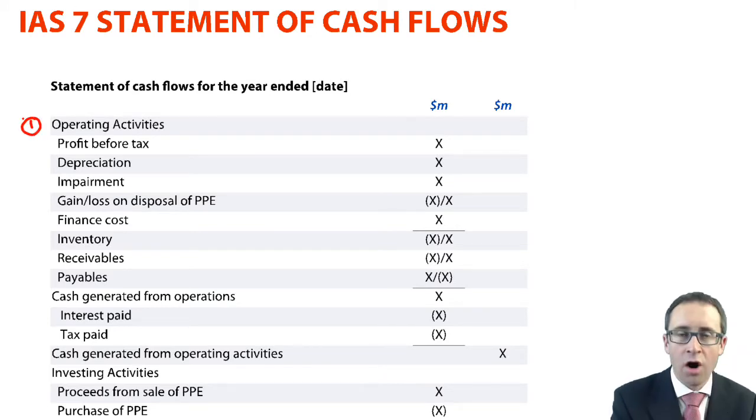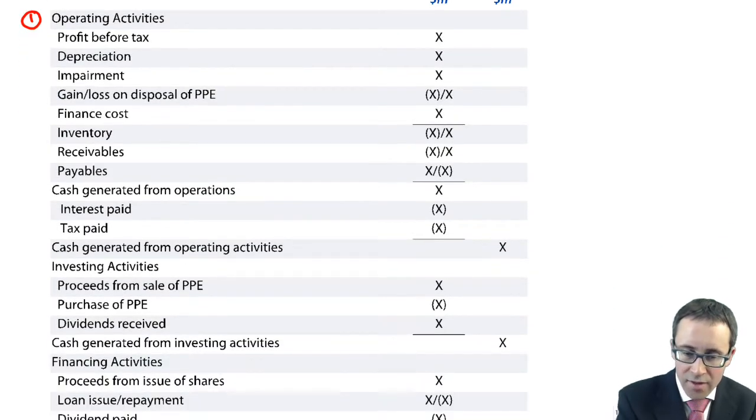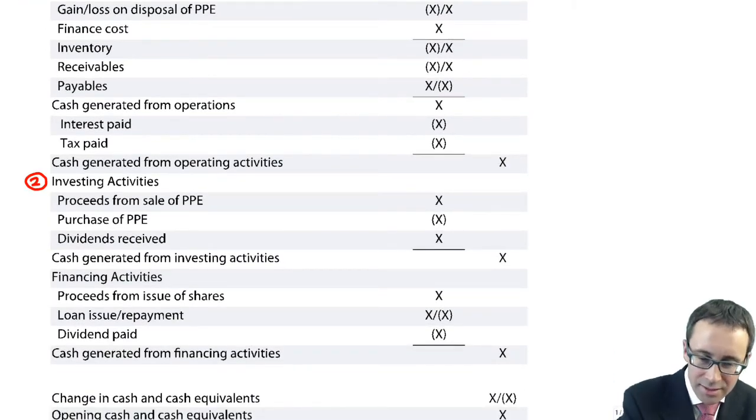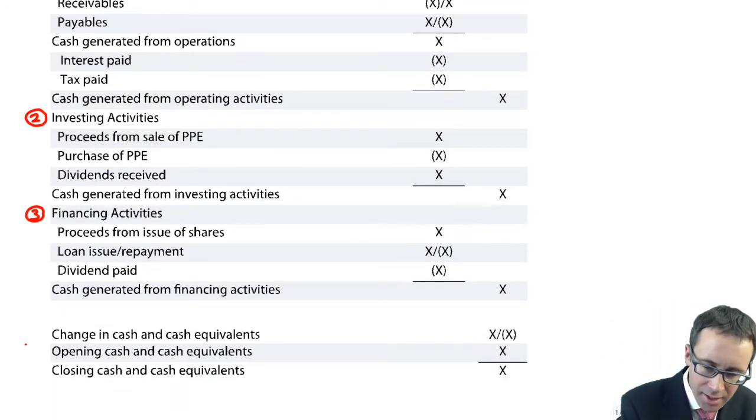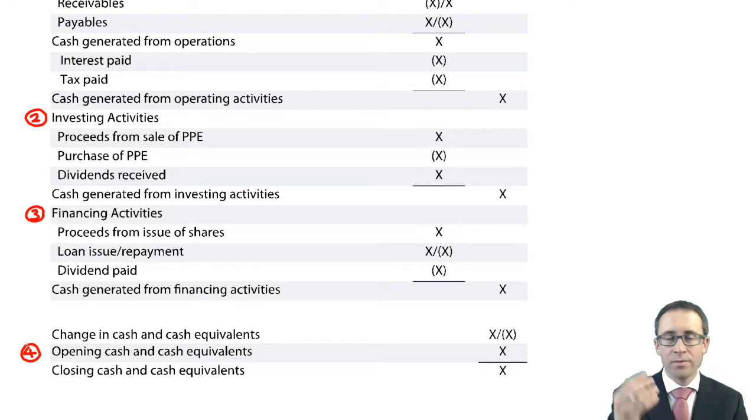The three relate to your operating activities, so your day-to-day activities. You've then got your cash flows from your investing, which is buying and selling non-current assets. You also have your financing, so the cash that's raised from issuing shares, from issuing debt and repaying debt. That's the three. The fourth one I speak about is the one at the bottom, whereby you look at the movement in your cash and your cash equivalents.